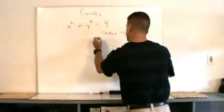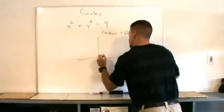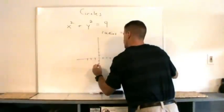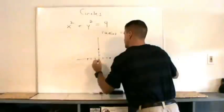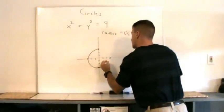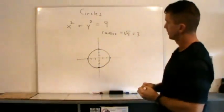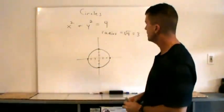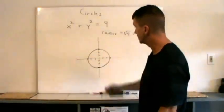We can sketch this circle. Going out three notches in each direction from the origin and connecting those points gives a rough sketch of the circle. It's not perfect but it gives you a basic sense of what the circle looks like. Now, this is not a function — it fails the vertical line test.